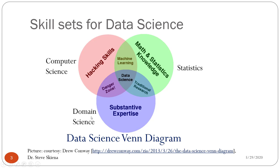The third important skill is domain science, also called substantive expertise. For example, if a company has a project in finance and is hiring a data scientist, that data scientist should have hacking skills, math and statistics knowledge background, and also understand finance a little bit. All these skills together are required before a data scientist would be considered a decent candidate.